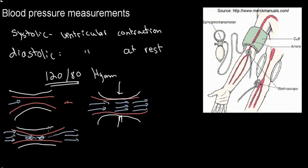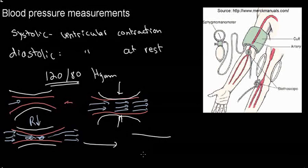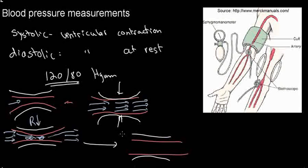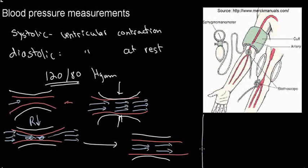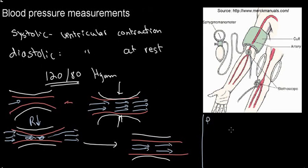At the point of restricted flow, I have turbulent flow because the radius of the medium has dropped, and I'll actually hear a noise from that turbulence. If I release the cuff further, with hardly any pressure remaining and the blood vessel at its original diameter, I'll have laminar flow again and won't hear anything. This is why we hear what we hear when measuring blood pressure.